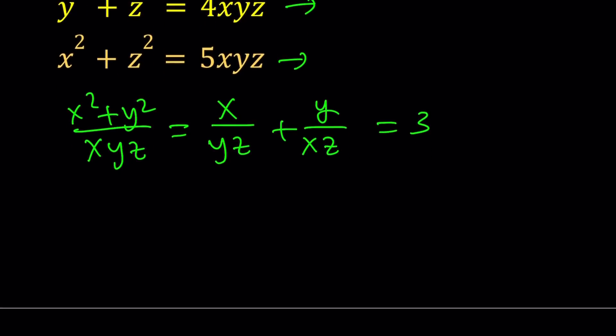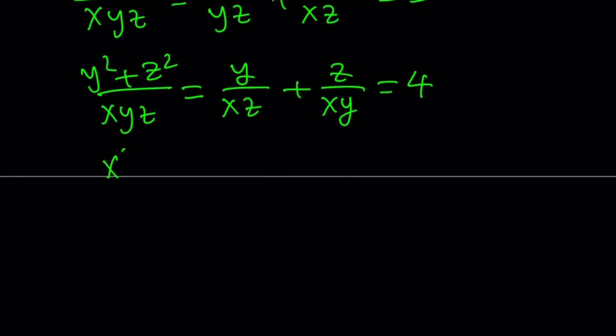Let's go ahead and do it for the other equations as well. Y squared plus z squared divided by x, y, z is equal to y over xz plus z over xy. And as you know, that is going to equal 4 from the second equation. And then if you do it again, x squared plus z squared divided by x, y, z. Remember, x, y, z does not equal 0. So we can do it. x over yz plus z over xy. And that is going to equal 5. 3, 4, 5. The Pythagorean triangle, right? Awesome.